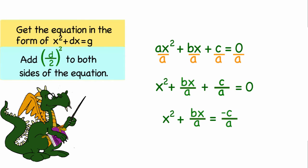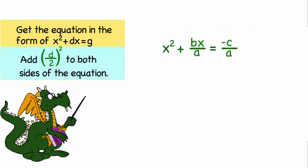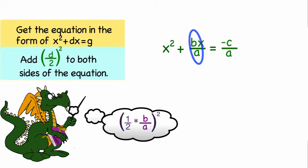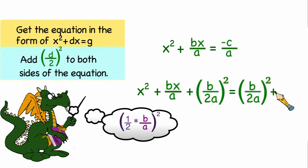Now I need to figure out what number I need to add to both sides to complete the square. We're going to take one half of the term in front of x and we're going to square that, and that would leave us with b over 2a quantity squared, and I'll add that to both sides of the equation.